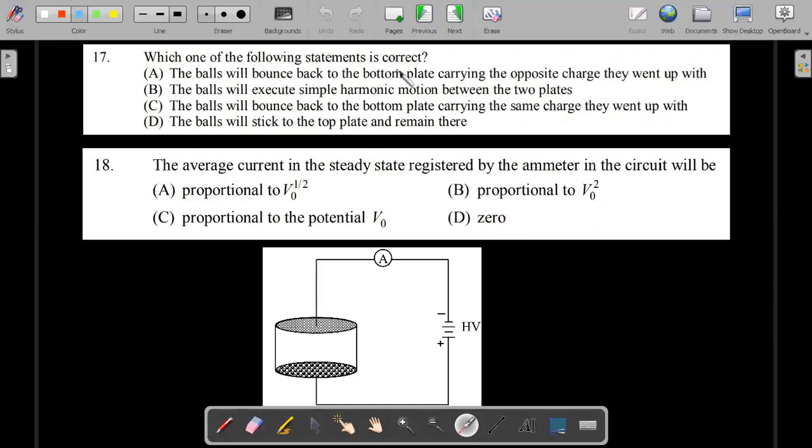So which of the following statements is correct: balls bounce back to the bottom plate carrying the opposite charge they went up with, balls will execute simple harmonic motion between the two plates, balls will bounce back to the bottom plate carrying the same charge they went up with, the balls will stick to the top plate and remain there. And the second question: the average current in the steady state registered by ammeter in the circuit will be proportional to V₀. I'll go ahead with the solution for the first question.